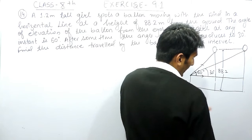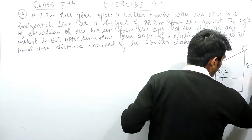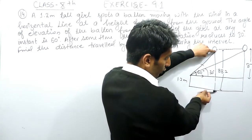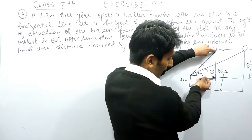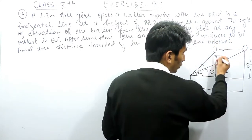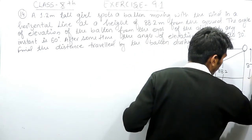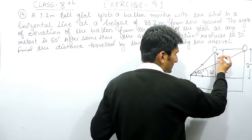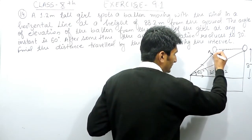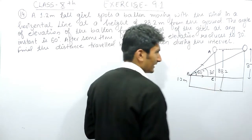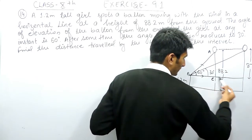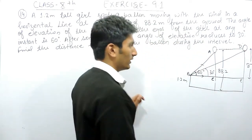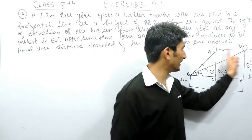The girl's height is 1.2 meters, so this height is also 1.2 meters. Therefore, the effective height from the girl's eye level to the balloon is 88.2 minus 1.2, which equals 87 meters. This 87 meters is the perpendicular height used in both triangles. Now we need to find the ratio for tan theta in both triangles to get the answer.